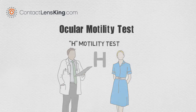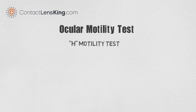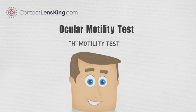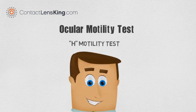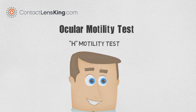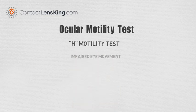The doctor would then observe both the left and right eye during the exam for any abnormal behavior. If there is any impaired eye movement noticed, it could indicate an eye misalignment.